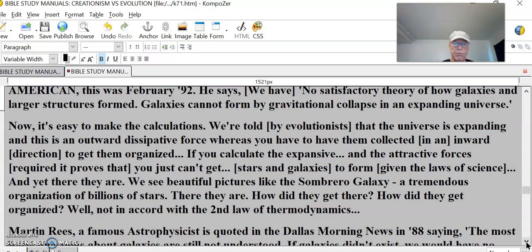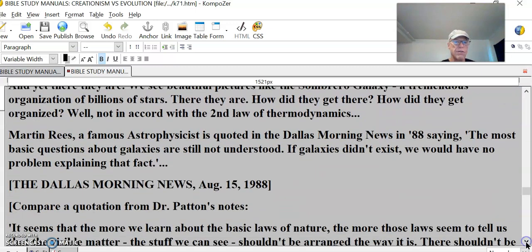We see beautiful pictures like the Sombrero Galaxy, tremendous organization of billions of stars. How did they get there? How did they get organized? Not in accord with the second law of thermodynamics. Martin Rees, the famous astrophysicist, is quoted in the Dallas Morning News in 1988 saying the most basic questions about galaxies are still not understood. If galaxies didn't exist, we would have no problem explaining that fact. But they do.